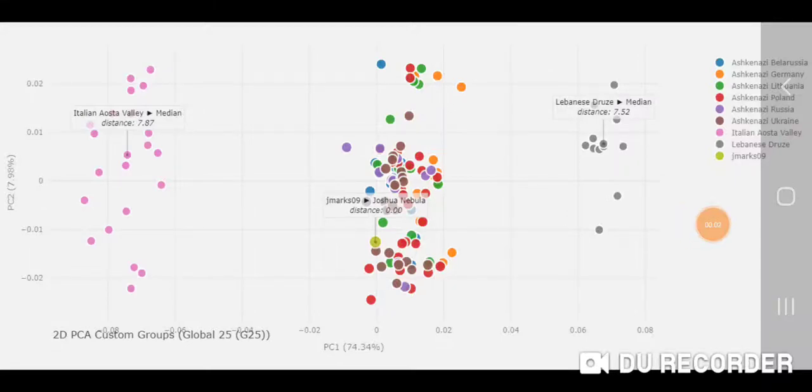Hey guys, I wanted to point out a really cool feature in GenoPlot. It's a custom PCA where you can input your Global 25 coordinates and use the Global 25 reference populations to make your own PCA plot. You can also use Eurogenes K13 and some other GEDmatch calculators.